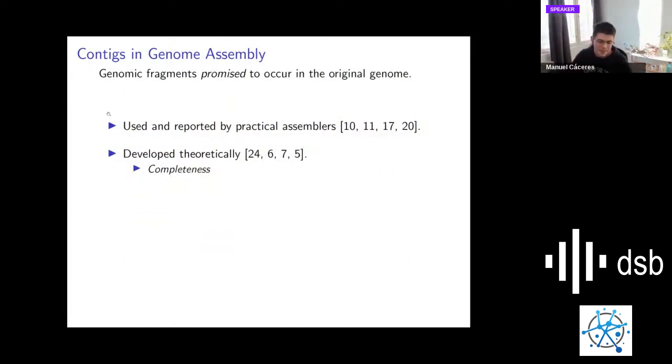In genome assembly, this is exactly what contigs are. Contigs are sub-sequences of the original sequence that we know for sure are part of the genome, and there are a lot of practical assemblers now reporting contigs. There is also a lot of theoretical work interested not only in safe solutions, but in complete solutions. But in multi-assembly, this is not well developed, and this is what this work is about.